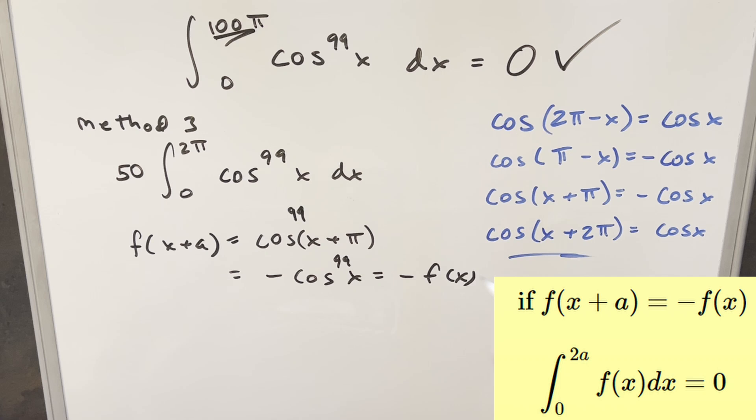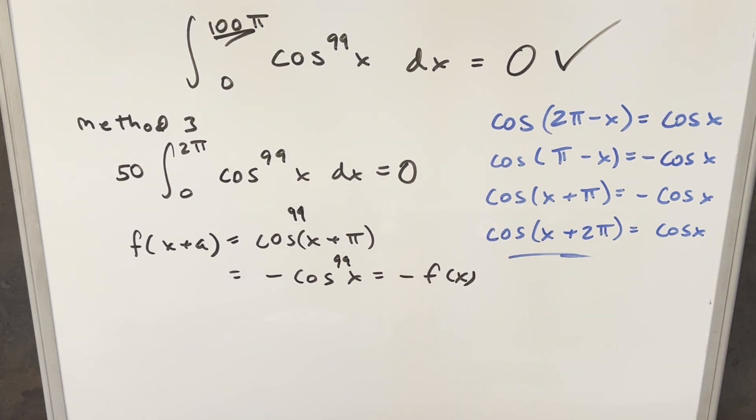And so using this formula here, we can just say our integral is 0. And so I think this one actually does save one step over method 2. I mean, it might be a two second step, but it still saves a step. So I think method 3 wins over method 2, even though they're still really similar.